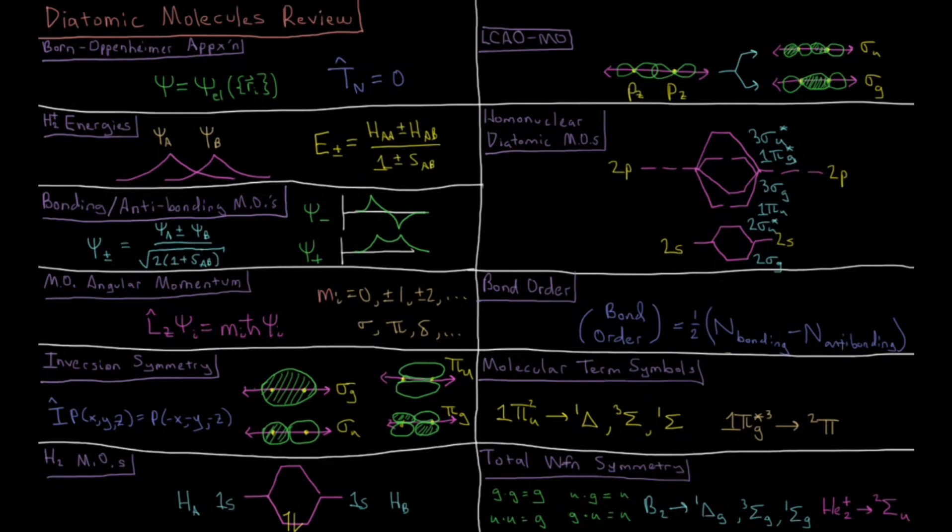This video is a review of diatomic molecules in quantum chemistry. We start with the Born-Oppenheimer approximation, which says that the kinetic energy of nuclei is zero, that is that the nuclei are fixed in position